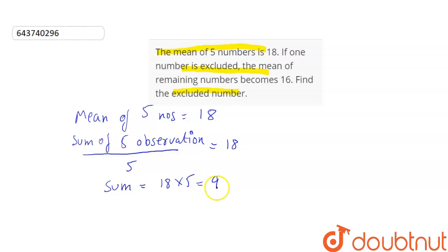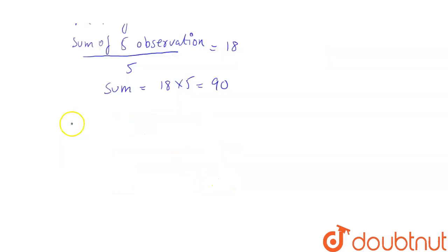Let the excluded number be x. So the mean becomes 90 minus x by 4, which is equal to 16.